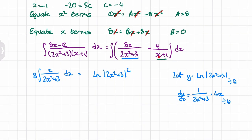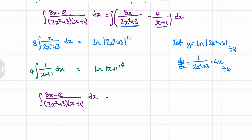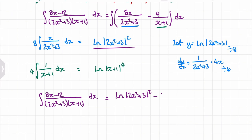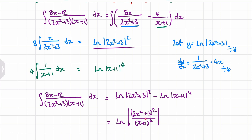For the second term, we pull the 4 out as a constant and integrate 1/(x + 1), giving -4·ln(x + 1), which we write as -ln((x + 1)⁴). Using the division rule for logarithms, we can combine both terms and write the result as ln((2x² + 3)² / (x + 1)⁴).